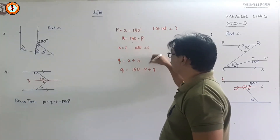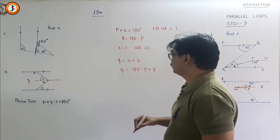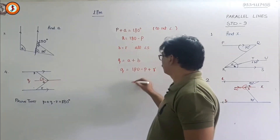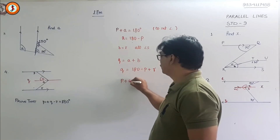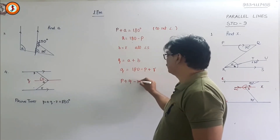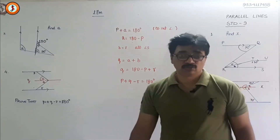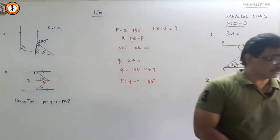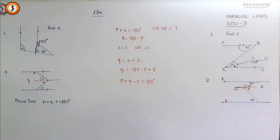Now q will be equal to a plus b, so q equals (180 minus p) plus r. Rearranging: p plus q minus r equals 180, or bringing terms across: p plus q plus r equals 180 degrees. And this is the proof. Rewind these sums and watch them once or twice.